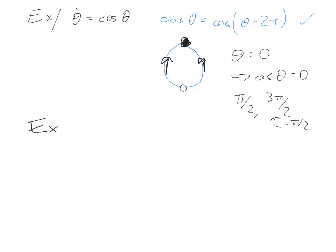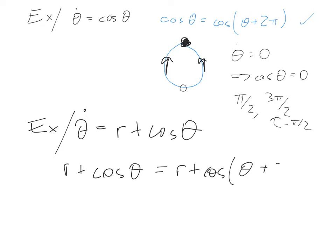And now I want to look at an example where we have a bifurcation occurring on the circle on S1. The example is theta dot equals r plus cosine theta, and r plus cosine theta equals r plus cosine of theta plus 2 pi, so we still have a periodic function.